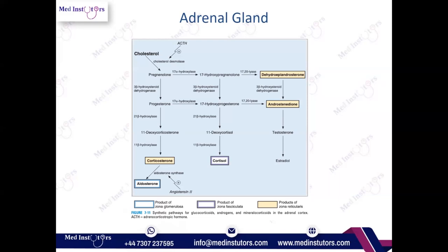Under the action of 21-beta-hydroxylase enzyme, progesterone is converted into 11-deoxycorticosterone, which is further converted into corticosterone, which then forms aldosterone. So 21-beta-hydroxylase action is critical if we want to have aldosterone in the body.